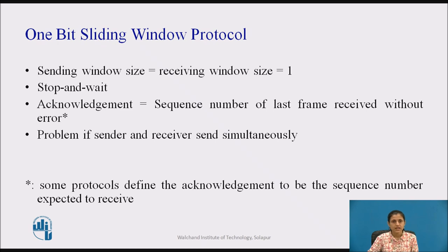Let us see a sliding window protocol with a window size of 1, that is the 1-bit sliding window protocol. It is also called a stop-and-wait protocol since the sender transmits a frame and waits for its acknowledgement before sending the next one.